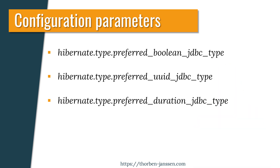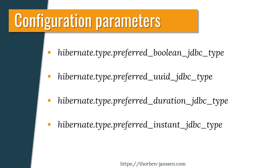hibernate.type.preferredDurationJDBCType sets the JDBC type code for attributes of type Duration. By default, these get mapped to org.hibernate.types.SqlTypes.INTERVAL_SECOND, which represents the JDBC type code 3100. hibernate.type.preferredInstantJDBCType sets the JDBC type code for attributes of type Instant. By default, these get mapped to org.hibernate.types.SqlTypes.TIMESTAMP_UTC, which represents the JDBC type code 3003.